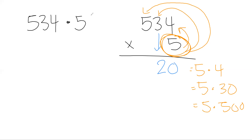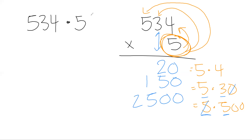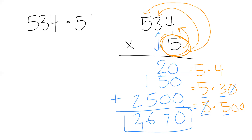We get those answers and line them up, then add. Five times 4 is 20 — notice I'm putting things in the right place value. Five times 30 is 150. Five times 500 is 2500. Adding them up: 2670. So 534 times 5 equals 2670.